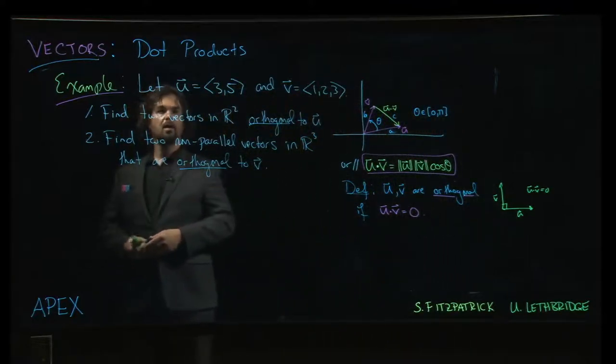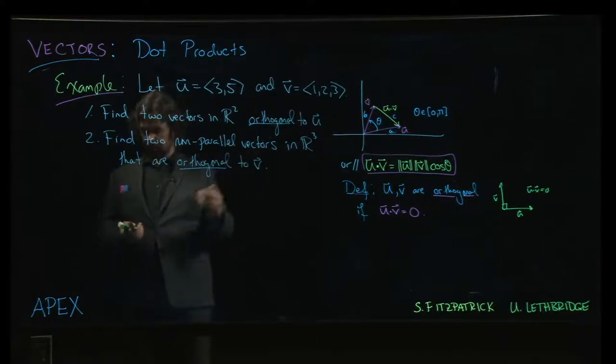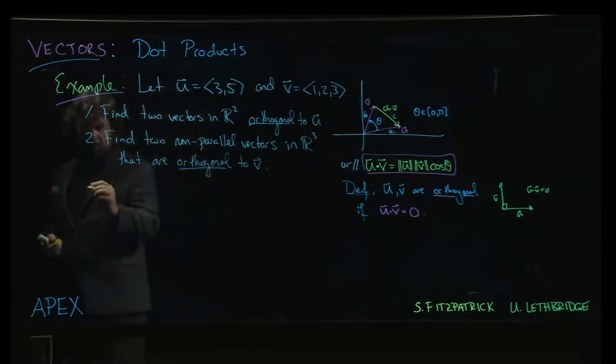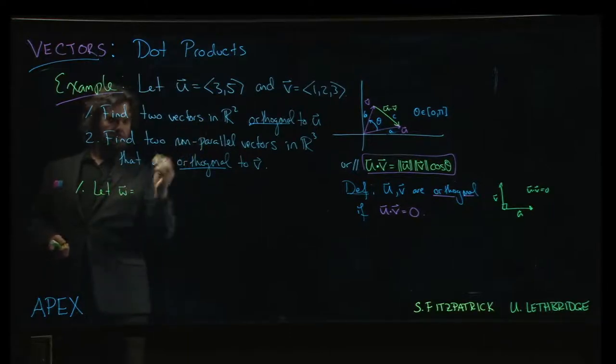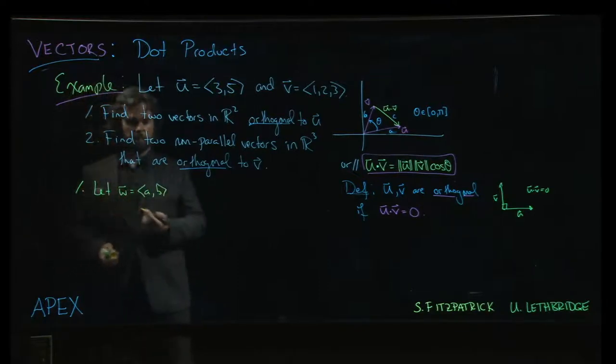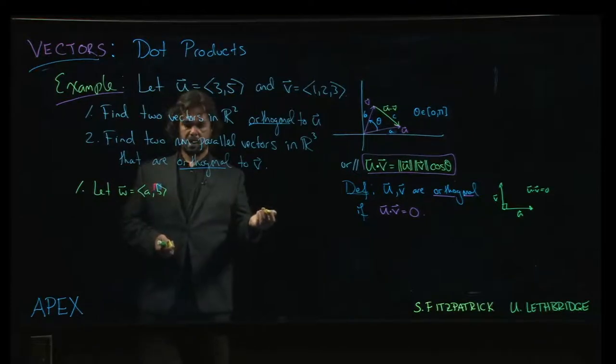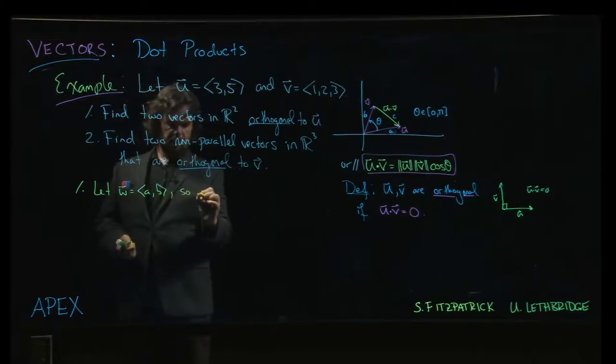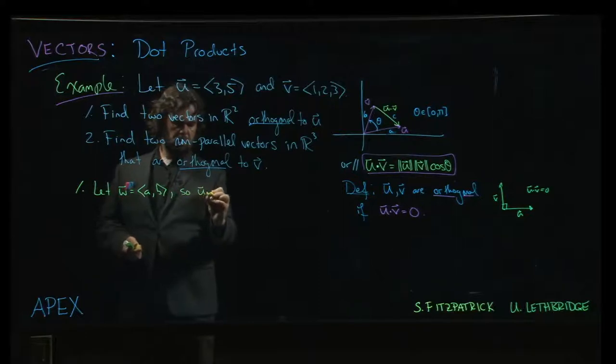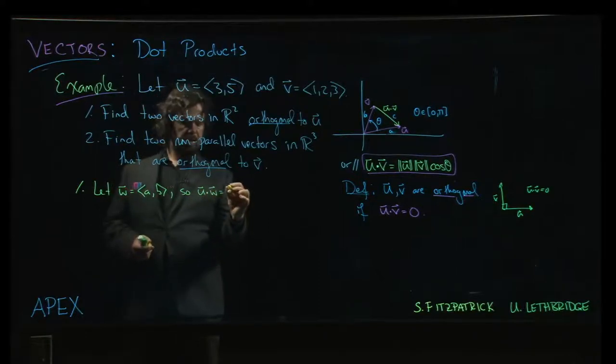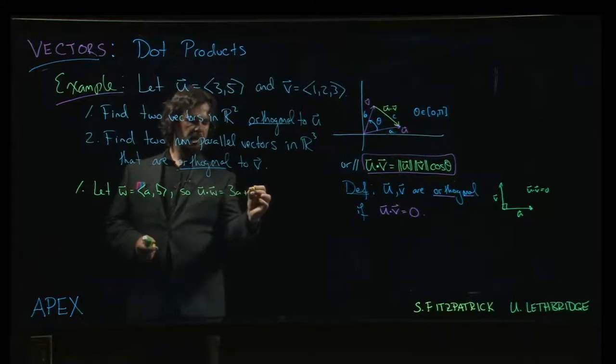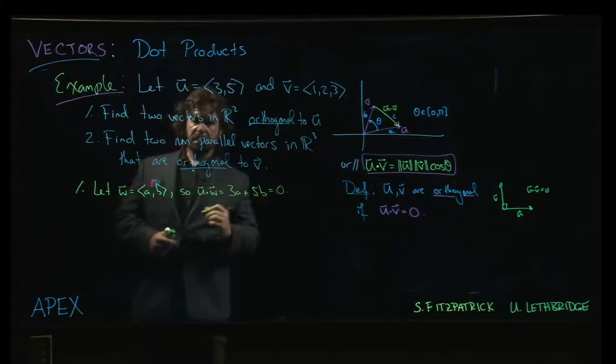So then we come to this example. We're given a couple of vectors and we want to find vectors that are orthogonal to the given vector. Let's start with the first one. Let's say w is (a,b). Since u is two-dimensional, w will also have to be two-dimensional or else the dot product will not make any sense. That means u dotted with w would be 3a plus 5b and we want that to be zero.